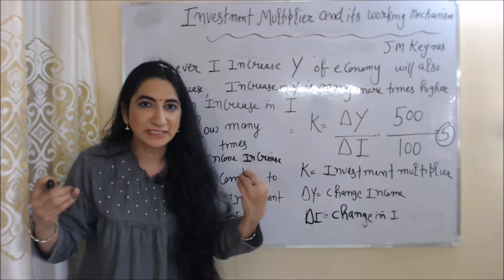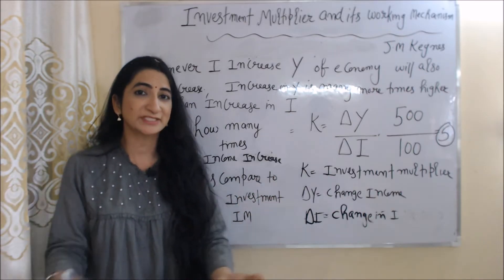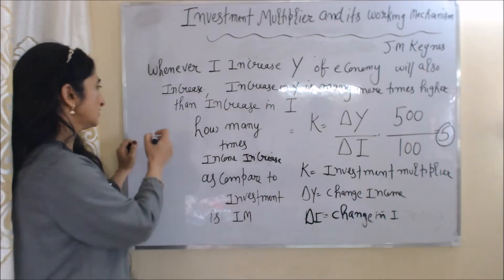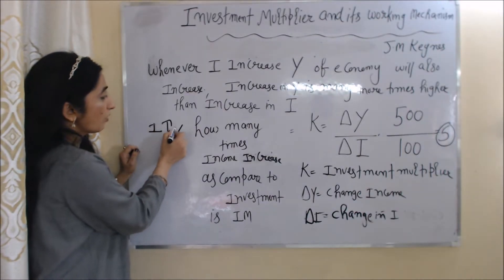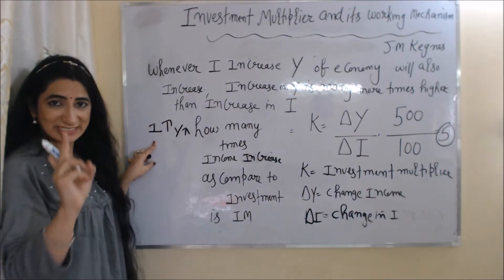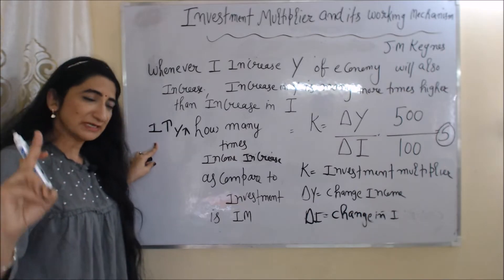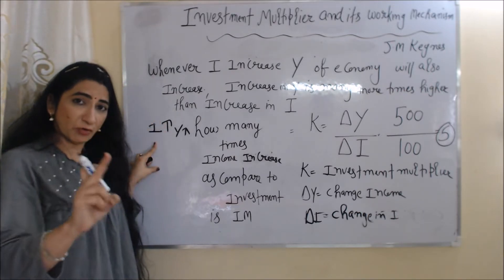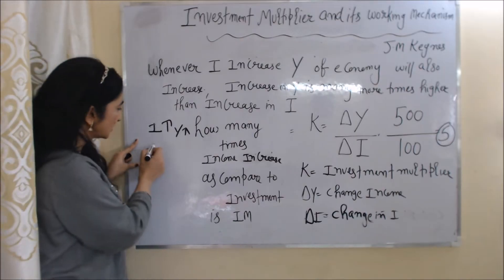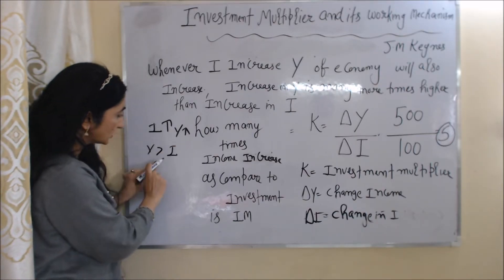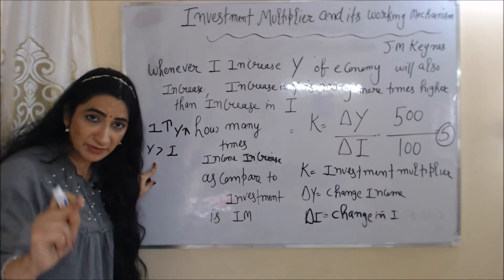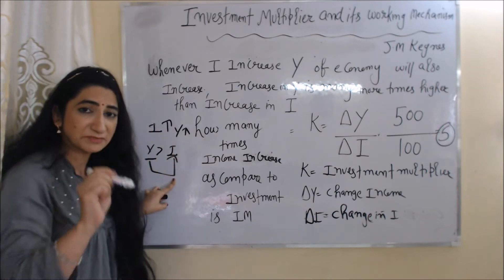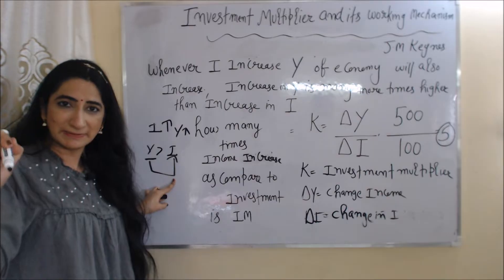Investment multiplier is given by famous economist J.M. Keynes. According to investment multiplier, whenever investment increases, income of the economy will also increase. And the increase in income is many more times higher than the increase in investment. How many times income increases as compared to investment is called the investment multiplier.